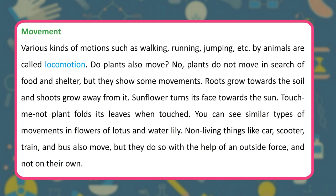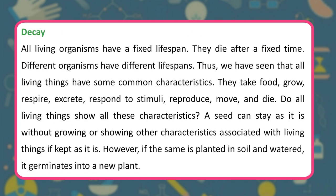Movement: various kinds of motion such as walking, running, and jumping by animals are called locomotion. Plants do not move in search of food and shelter, but they show some movements — roots grow toward the soil, shoots grow away from it, sunflowers turn toward the sun, and the touch-me-not plant folds its leaves when touched. Non-living things like cars and trains also move, but only with the help of an outside force, not on their own. All living organisms have a fixed lifespan — they die after a fixed time.